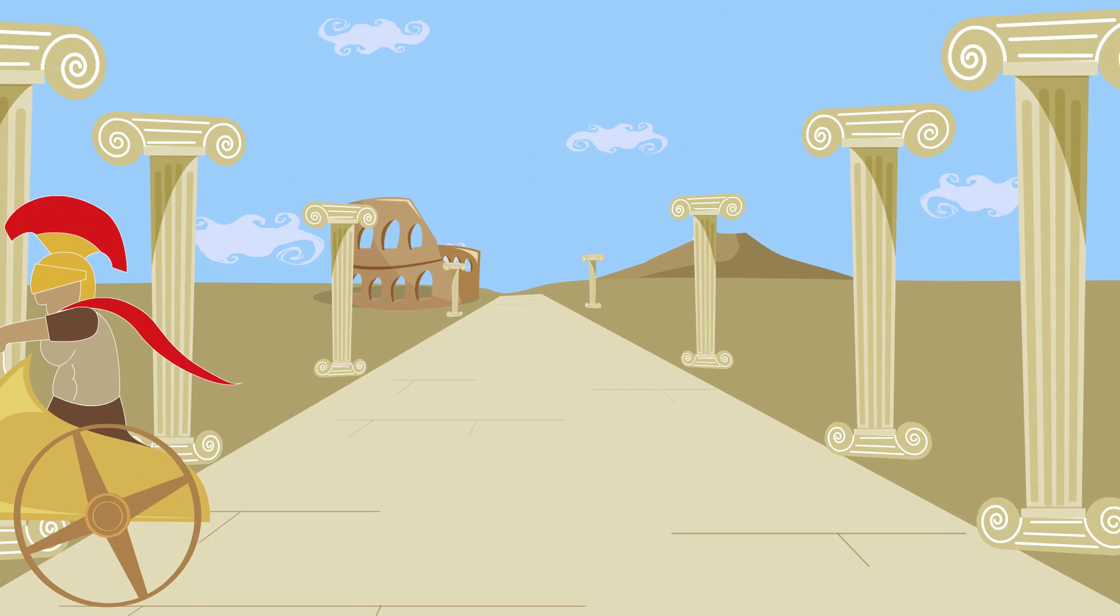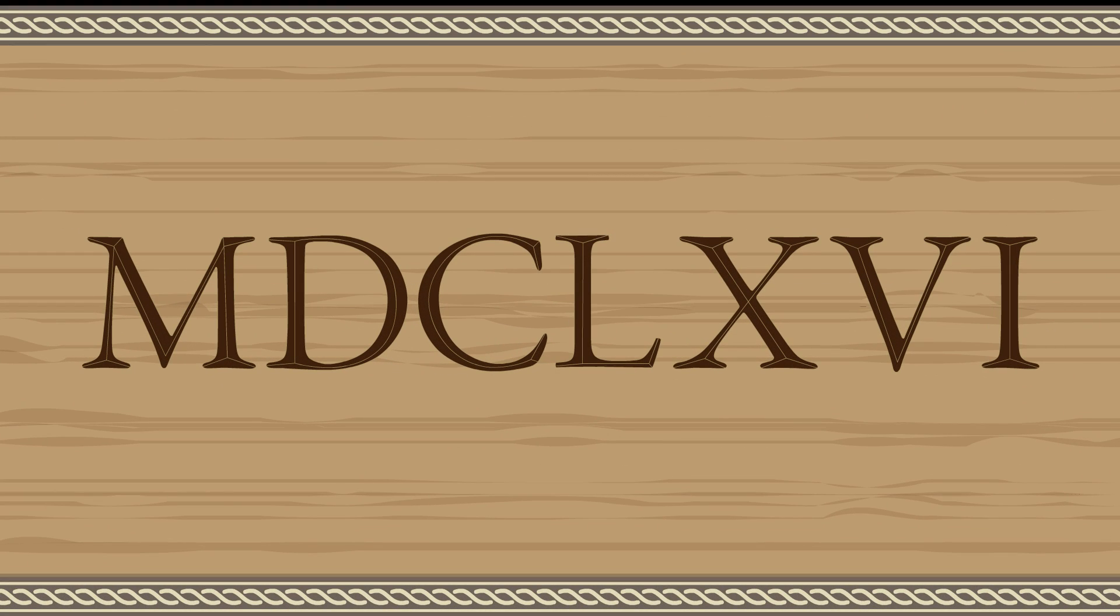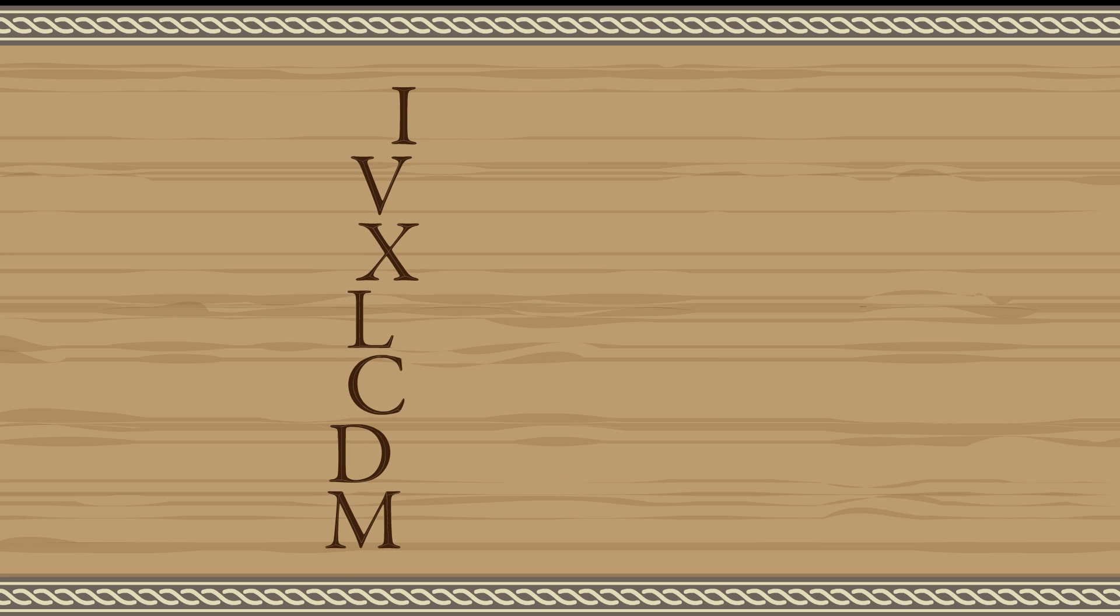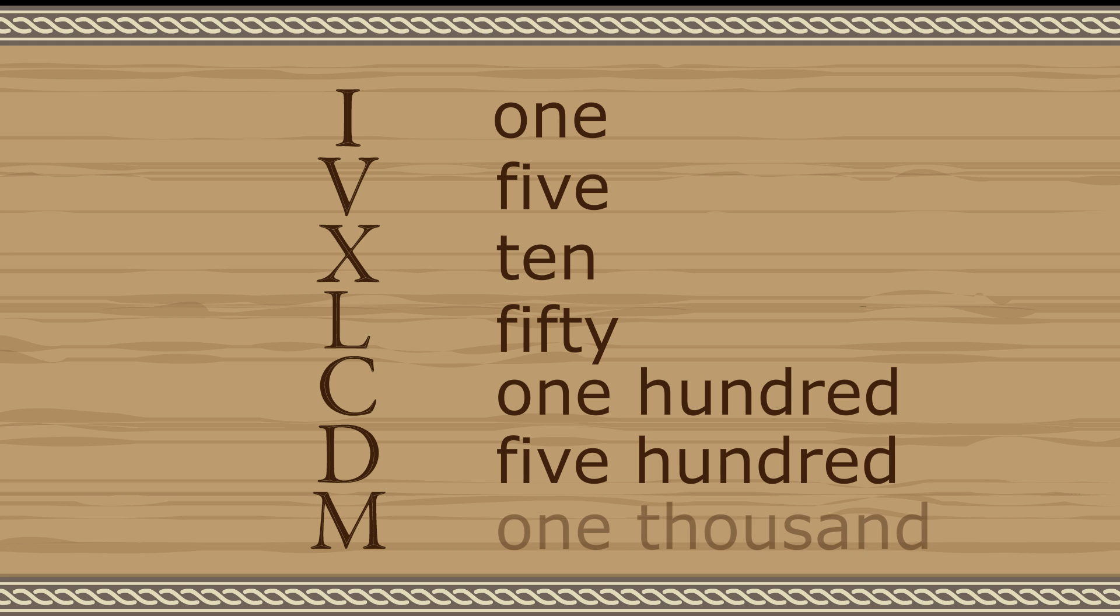For instance, the Romans used a natural number system which by today's standards seems quite complicated. In the Roman system, the symbols I, V, X, L, C, D, and M represent the quantities 1, 5, 10, 50, 100, 500, and 1000.